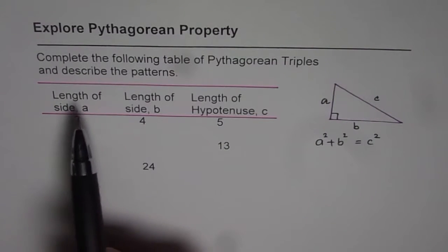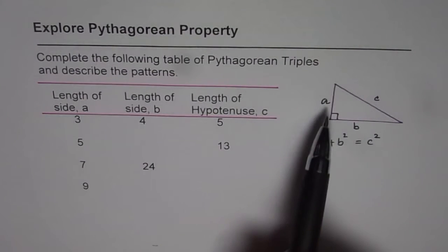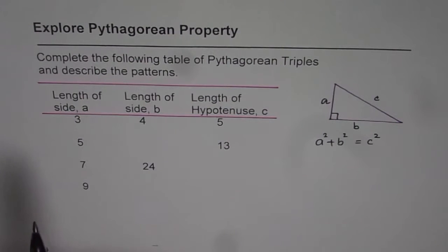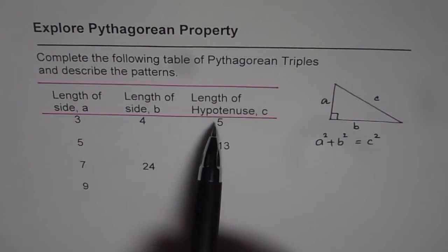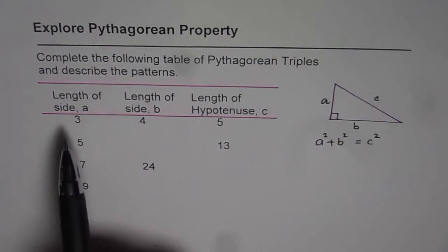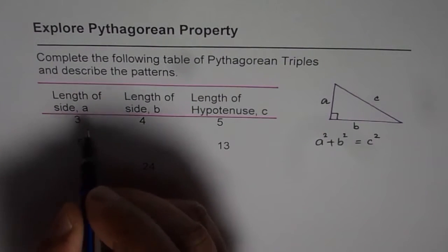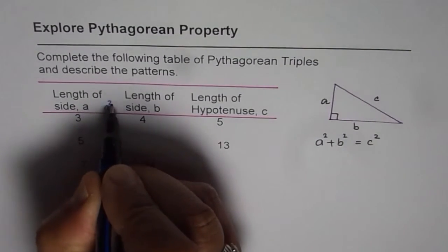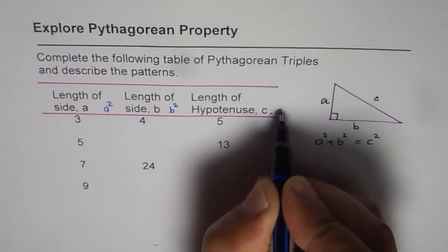In the table we are given length of side a, length of side b and c. We know if the sides are 3, 4 and 5 they form a right triangle. Since 3 square is 9 right? Let me write down here a square, b square and then c square.